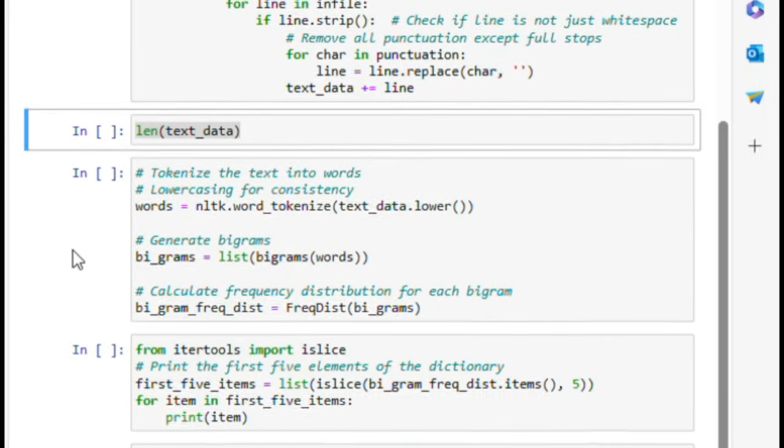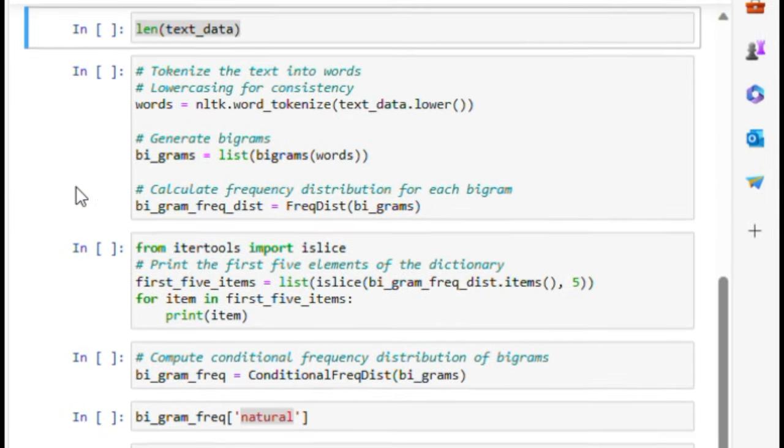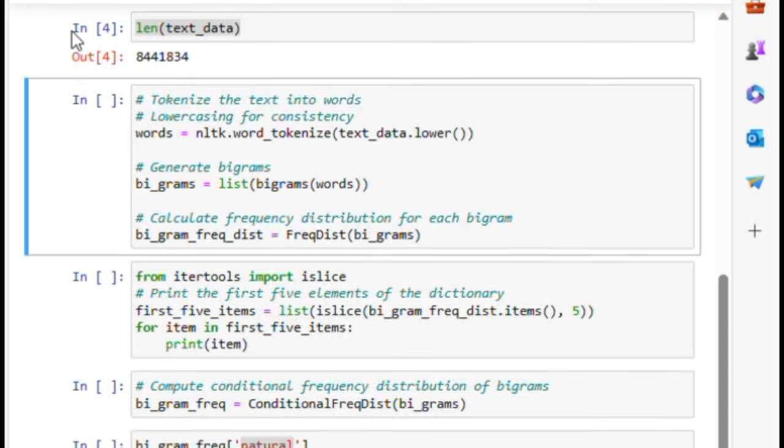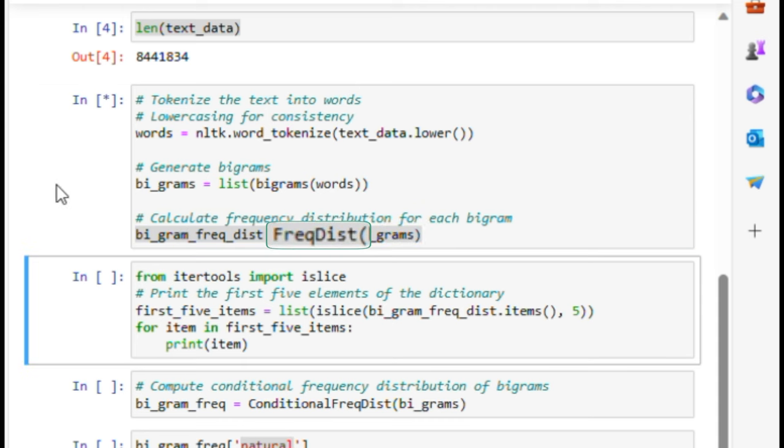The combined text can be pretty long. In my case, the combined text is more than 8 million characters long. After reading the files, we tokenize the text data into words, convert it to lowercase for uniformity, and generate bigrams. We calculate the frequency distribution of these bigrams using NLTK's function, FreqDist. This gives us insights into how often each bigram occurs in our text.